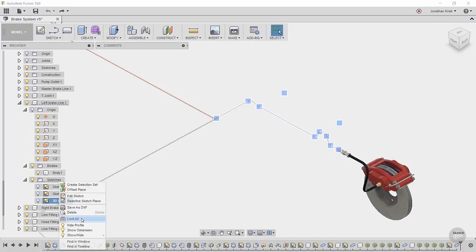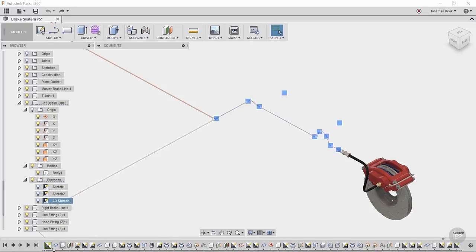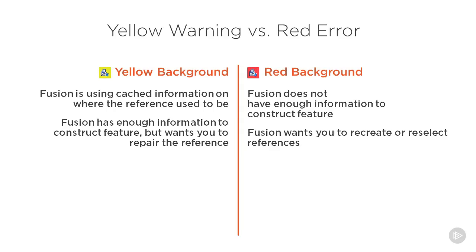I'll right-click the 3D sketch and say 'Find in Timeline.' It'll highlight and bring me right to that 3D sketch, and we'll notice right away that it has a yellow background. Yellow backgrounds indicate that a reference to the geometry has been lost, but Fusion 360 is still able to create the feature based on cached data. That means the feature right behind it — the pipe — was created off of that sketch, but the geometry has been moved or broken.